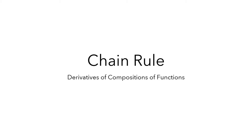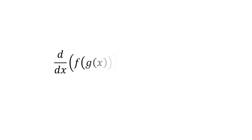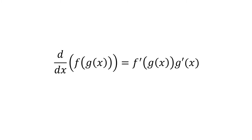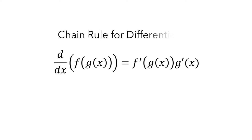In this video, I'll show you how to use the chain rule to differentiate composite functions. This equation provides a method for taking the derivative of the composite function f. The method is called the chain rule for differentiation. It says that the rate of change of a composite function is the product of the composed functions' rates of change.